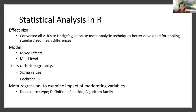We also used a mixed-effects multilevel model to account for variances found in fixed and random effects models, as well as the significant nesting observed in the data. Following PRISMA methods for meta-analyses, tests of heterogeneity were performed using sigma values and Cochrane's Q. Further, meta-regressions were conducted to examine the impact of moderating variables.